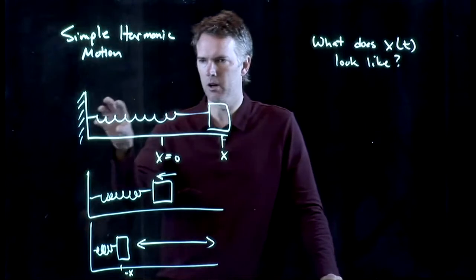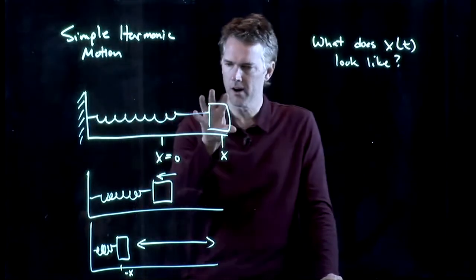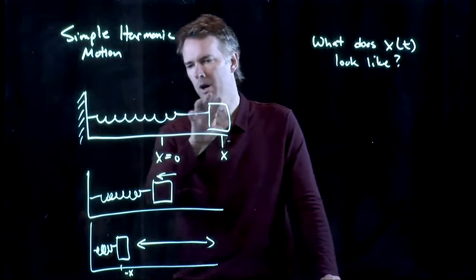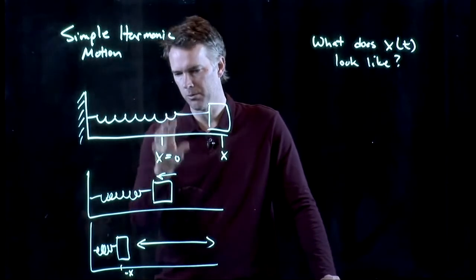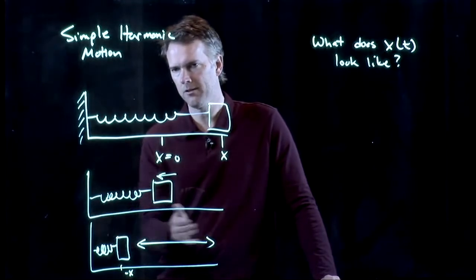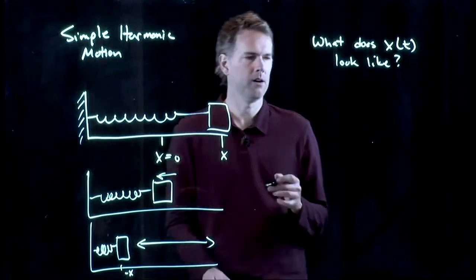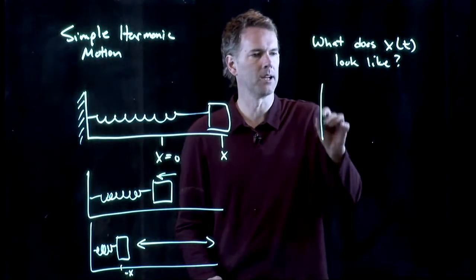What is the position of this thing as a function of time? Well, we know we start out here at some amplitude. We know it's going to move to the left. It's going to go through x equals zero. It's got to go to some negative amplitude. And then it's going to go back and forth. And so you might think this is going to look like this.